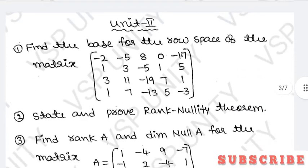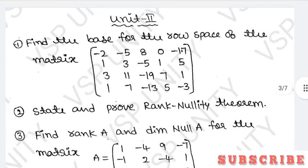Now, second unit. The second unit is very important and can be divided into two parts: the first part covers the rank nullity theorem, and the second part covers eigenvalues and eigenvectors.